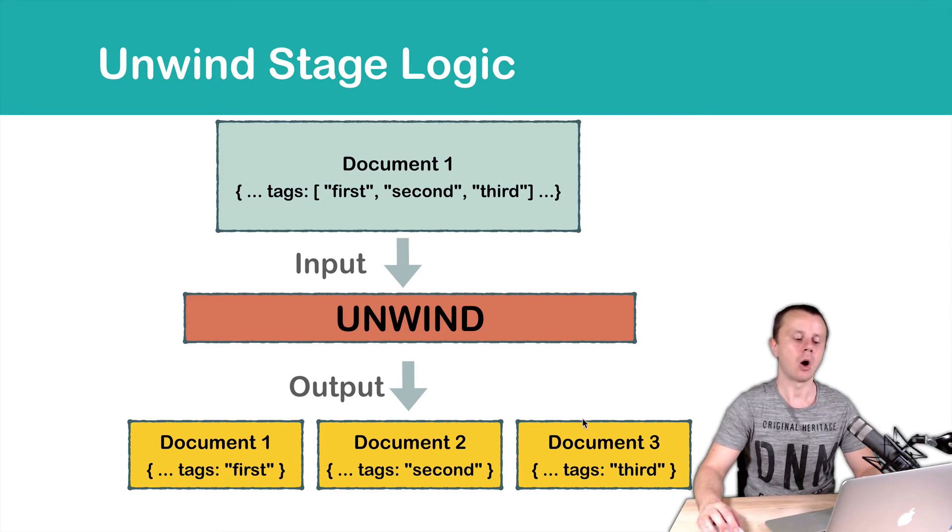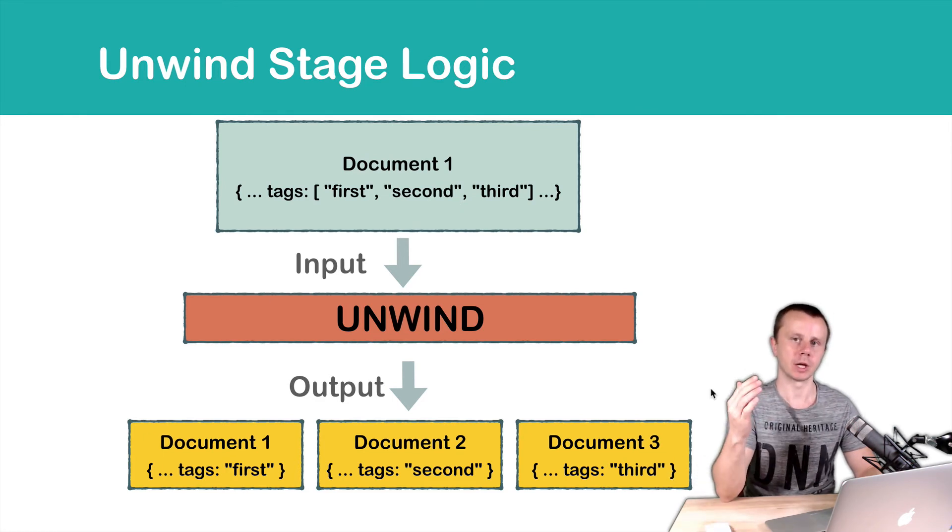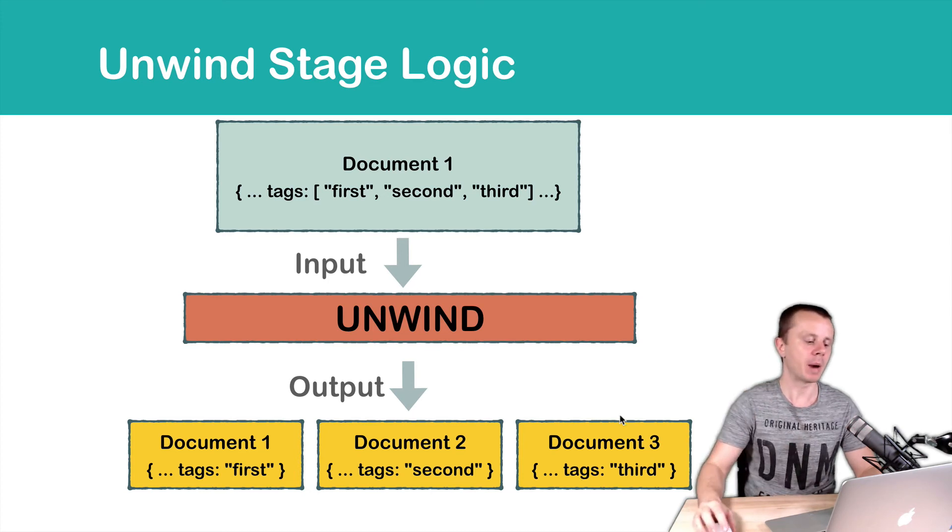And again, all other fields will be the same as in the document one at the input. And after this Unwind stage, you can pass resulting documents to the other stage, for example, group stage. And then perform grouping by tags field.